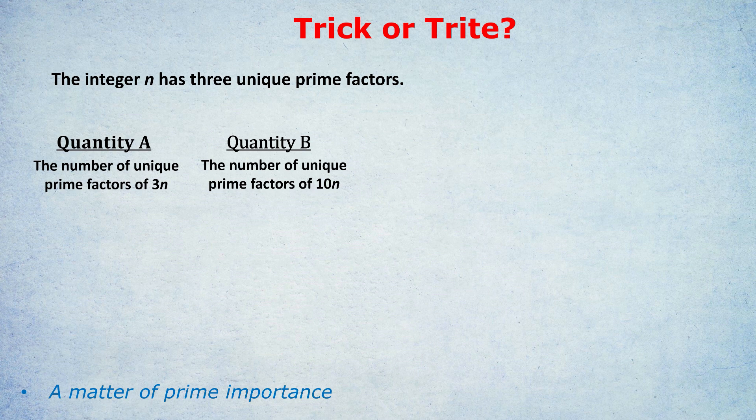So the number of unique prime factors would still be 2, just 5 and 2.